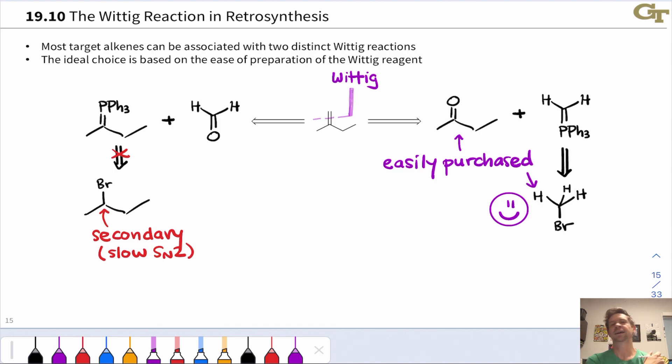So that synthesis on the right is definitely to be preferred in the case of this alkene. We're going to want to use 2-butanone and this easily preparable phosphonium ylid derived from methyl bromide or methyl chloride and some other methyl-based electrophile.